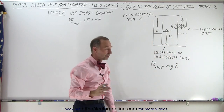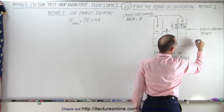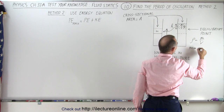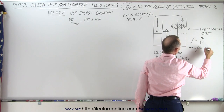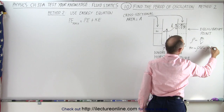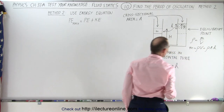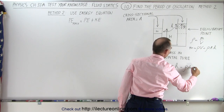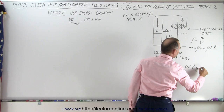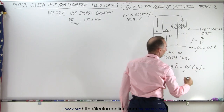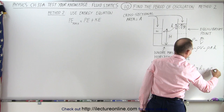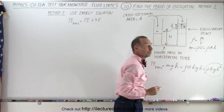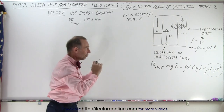All we have to do is figure out what M is equal to. Starting with the definition that density equals mass divided by volume, mass equals density times volume. In this case, that's the density times the cross-sectional area times the height H. Plugging that in, this is equal to density times A times H times G times H, which gives us density times cross-sectional area times G times H squared. This is the maximum potential energy in the system.